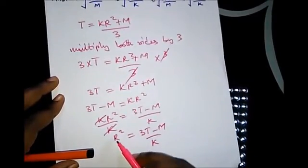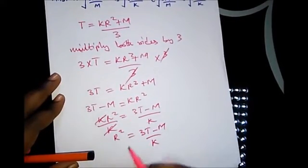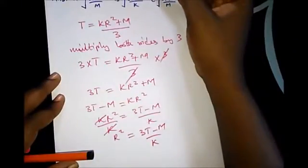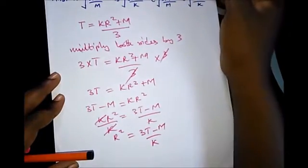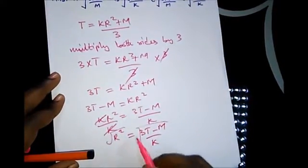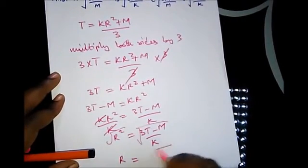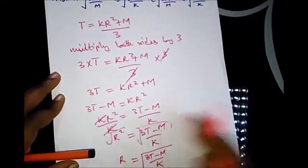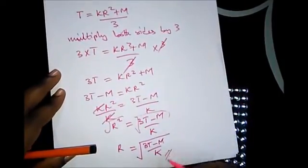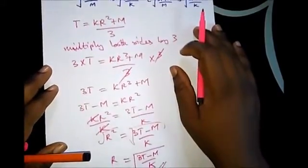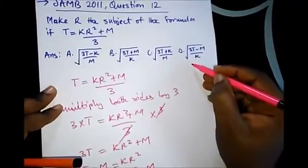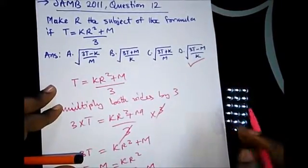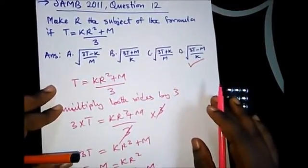We are not done yet — the question says make r, not r², the subject of the formula. From our previous video, to remove a square we square root both sides. So r = √((3t - m) / k). Remember we square root all quantities on the right-hand side. This is our final answer and the correct option, which is option D. Thank you, see you in the next video where we treat more past questions.